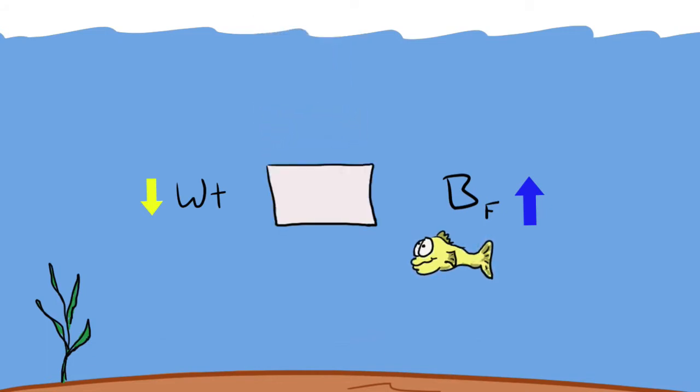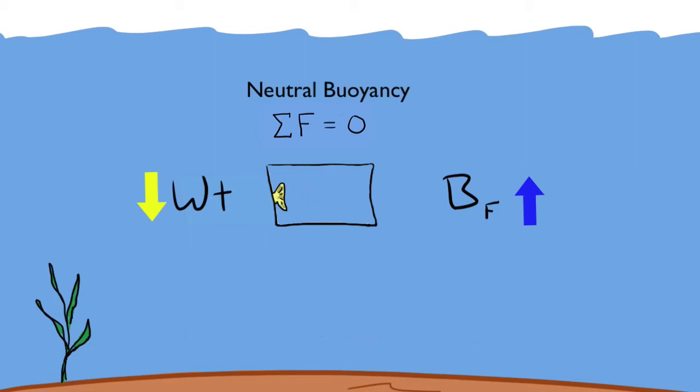Let's fill the entire box with water. Here we have a special case where the weight and the buoyant force are equal and opposite. So the box hovers in equilibrium. We call this neutral buoyancy.